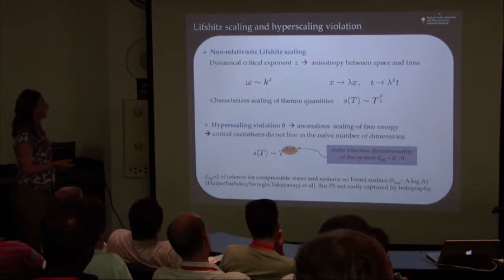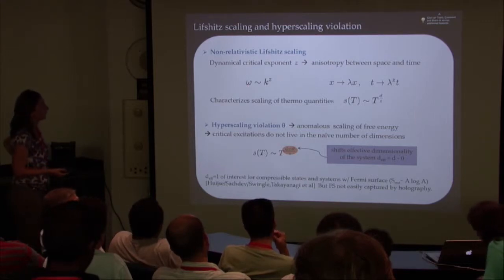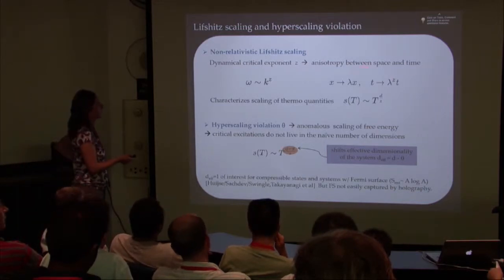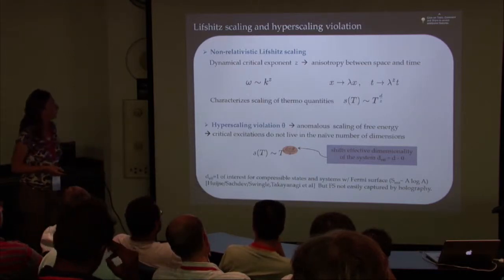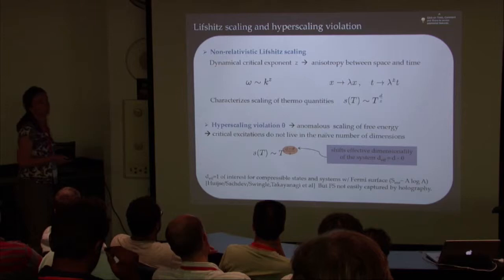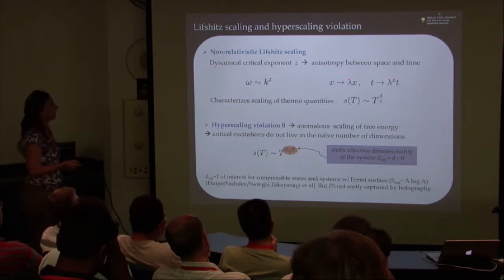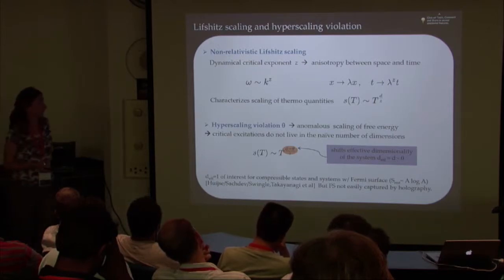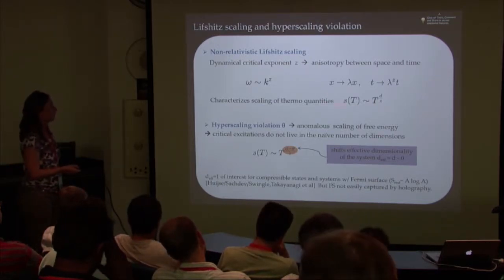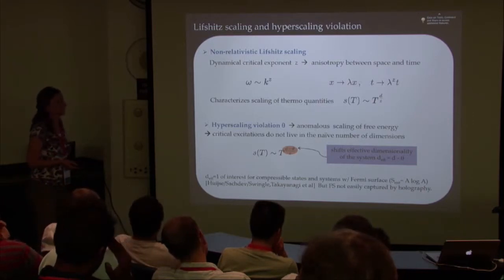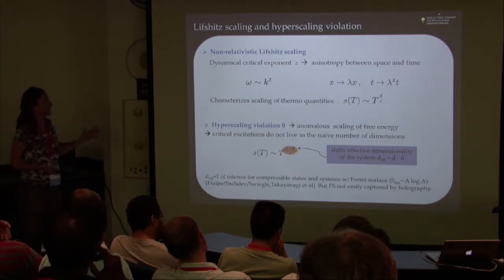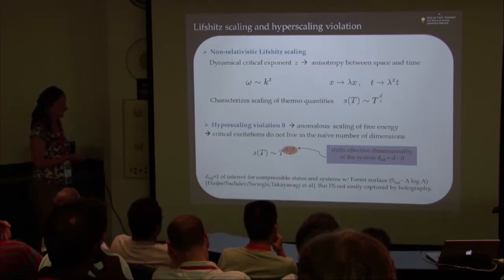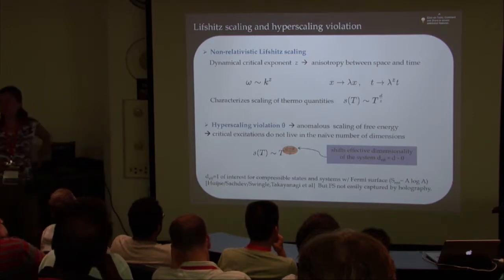Let me start with something probably familiar to many of you. For those that have not seen Lifshitz scaling, it's just a way to characterize the possible anisotropy between scaling in space and scaling in time. If you have a non-relativistic system in which time and space scale differently, the typical way to parameterize that is to introduce a dynamical exponent z, which keeps track of the different scaling between space and time.